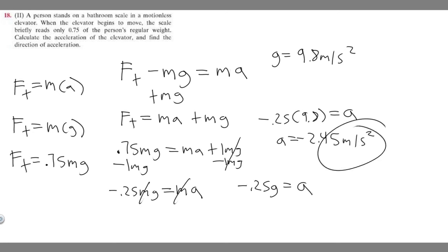So this is going to be your acceleration in the elevator, or the acceleration of the elevator, and the direction of the acceleration is going to be downwards, because this is negative, and so upwards would be positive, downwards is negative, so it's going to be downwards. Hopefully you found this useful.